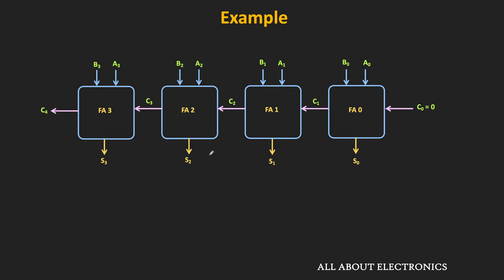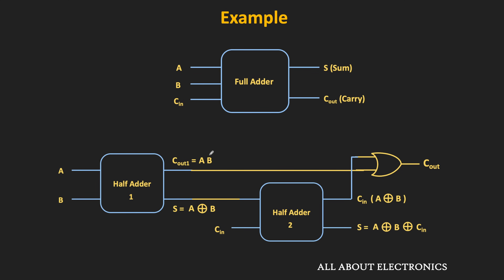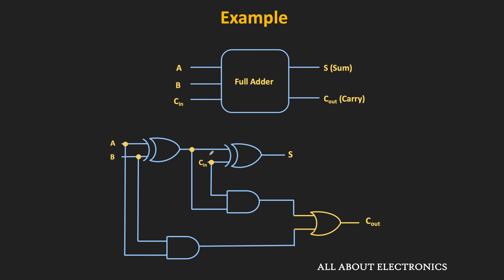Let's take an example: find the worst-case carry propagation delay of a four-bit adder. Each full adder is designed using two half adders and one OR gate. The propagation delay of each XOR gate is Txor = 20 ns, and the propagation delay of each AND and OR gate is Tp = 10 ns. First let's find the propagation delay of an individual full adder.